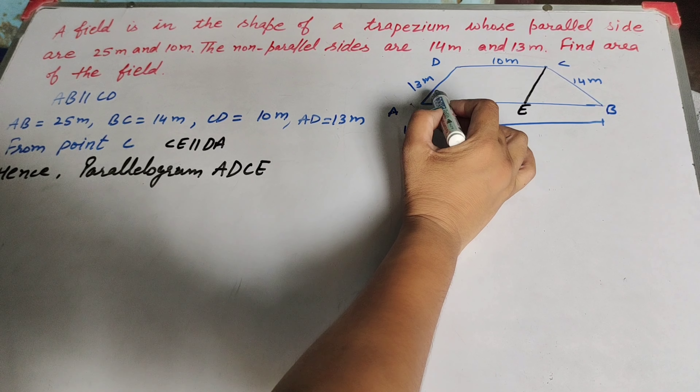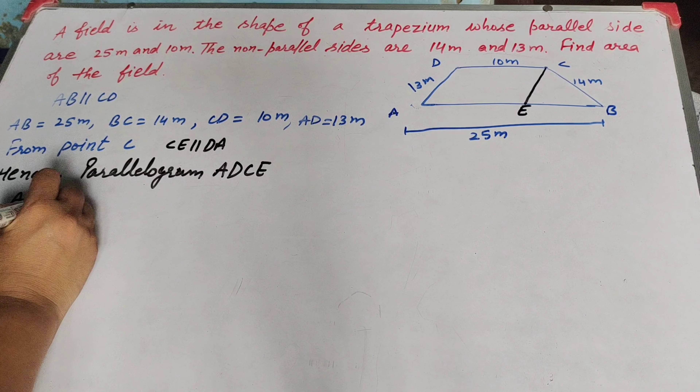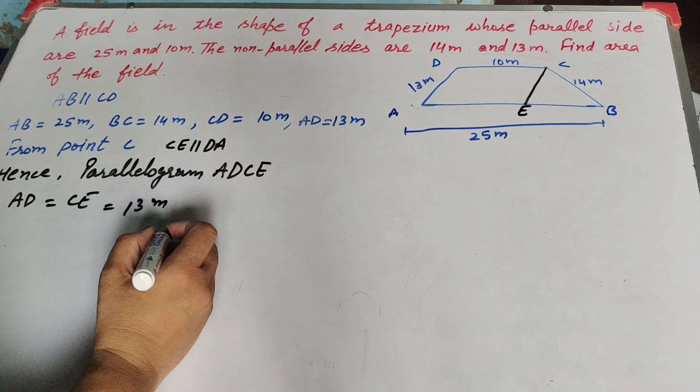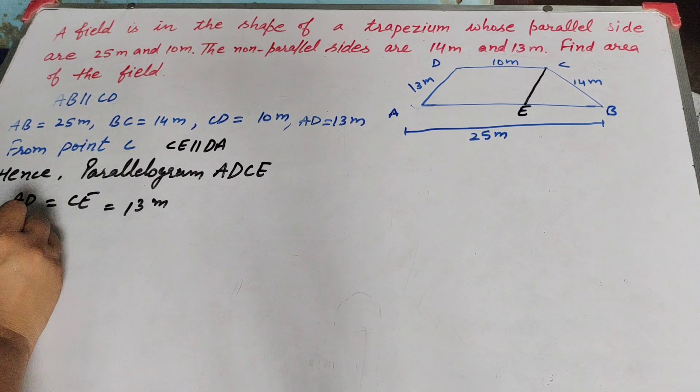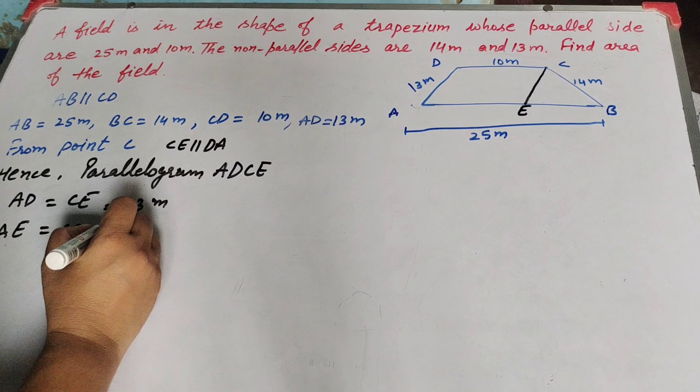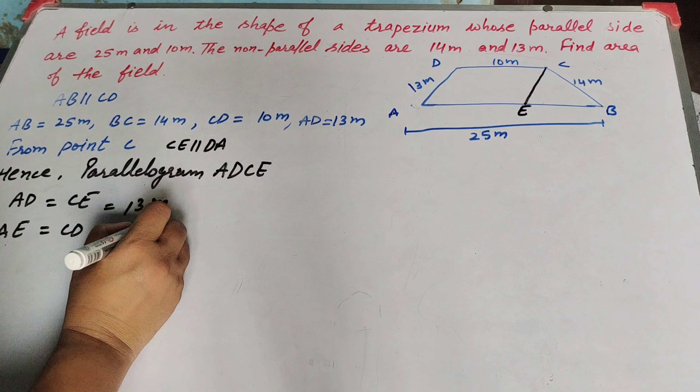Since AECD is a parallelogram, AE equal to CD equal to 10 meter, and DA equal to CE equal to 13 meter. Now BE equals AB minus AE, which is 25 minus 10, equal to 15 meter.